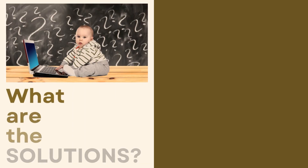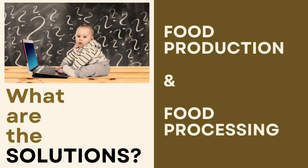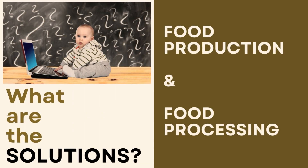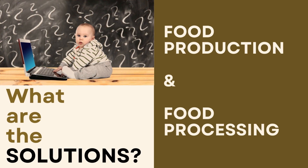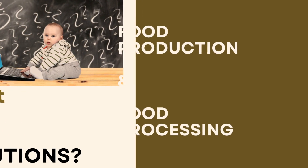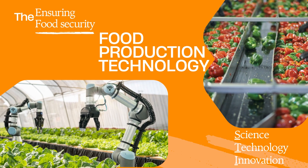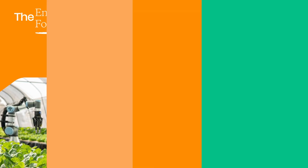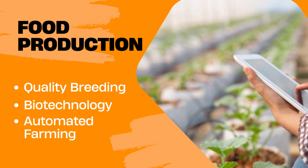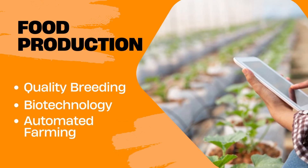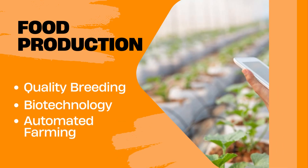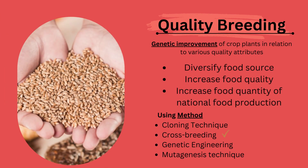Our solutions to these problems are divided into two major categories: food production and food processing. Let's start with food production technology. In food production, we use quality breeding, biotech, and automatic farming. Let's start with quality breeding.